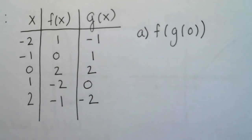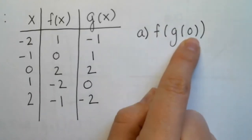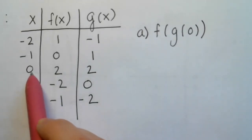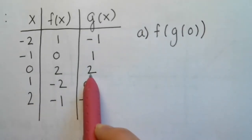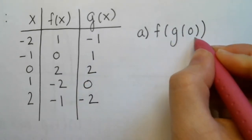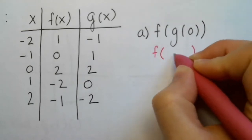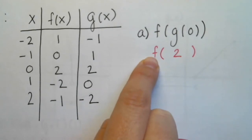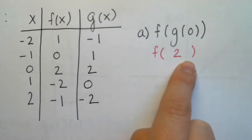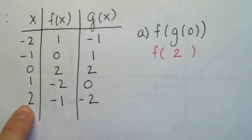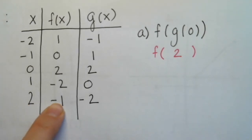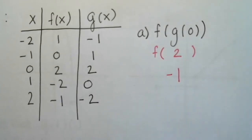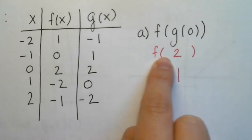Let's evaluate f of g of 0. The first thing we do is evaluate g of 0. Looking at the table, if we input 0, the output is 2, so g of 0 equals 2. Now we evaluate f of our answer, so f of 2. If we plug in 2, f of x is negative 1. So first g, then f.